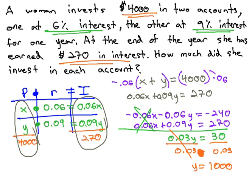We still need to find our x. We can find that really quickly by plugging back into the original equation. x plus y is 4,000. x plus 1,000 is 4,000.